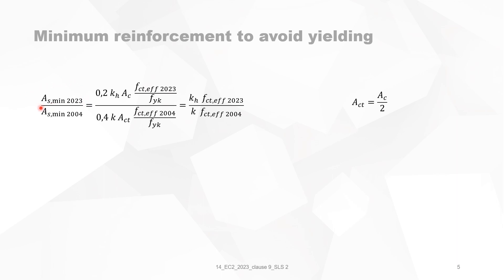We can now calculate the ratio of the minimum required reinforcement according to the code 2023 with reference to the code, the present code of 2004. We just divide the two formulas and then you see that this is the proportionality factor. For bending A_ct in the present code is of course A_c divided by two, the concrete section, the half of the concrete section. Now we can compare easily the minimum reinforcement by this formula.